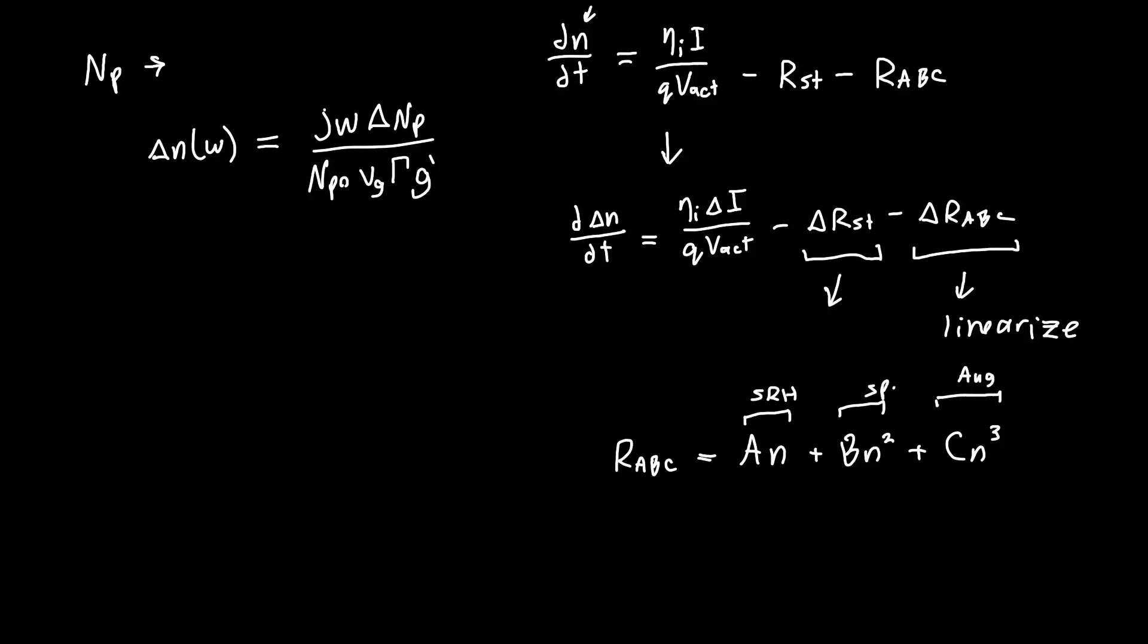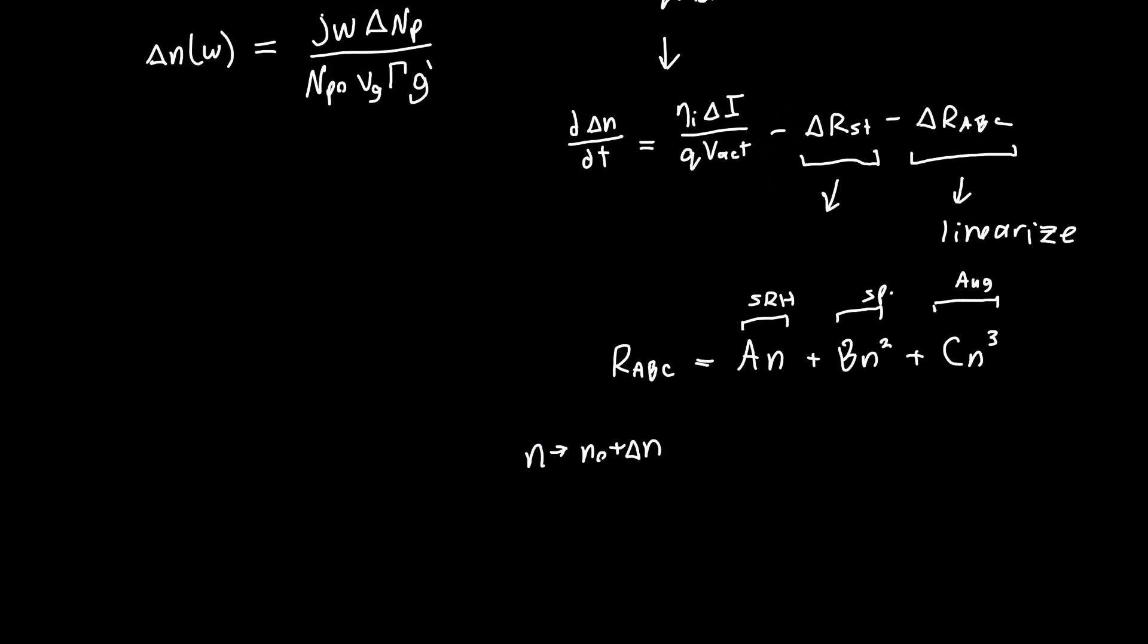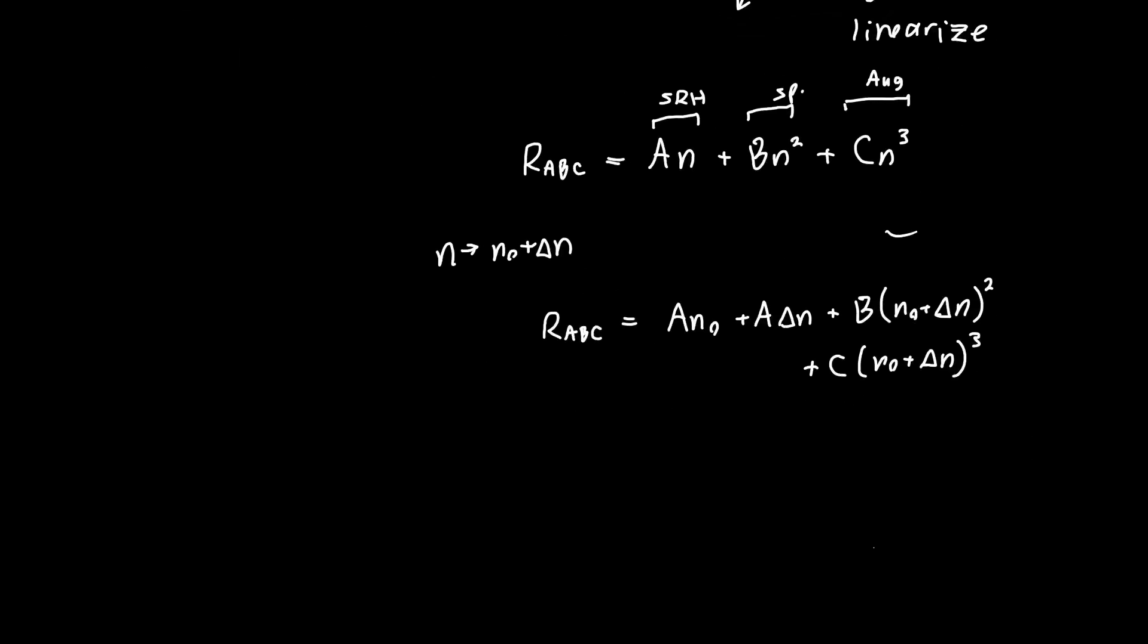We no longer want to deal with n, we want to deal with our DC component and delta n, so we can just blindly plug that in. Our ABC is just: a times n naught plus a times delta n plus b times (n naught plus delta n) squared plus c times (n naught plus delta n) cubed. You can factor this but that's not particularly interesting, so I'm going to leave that to you.